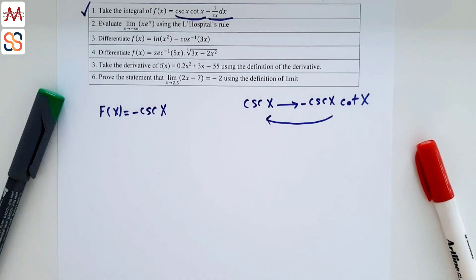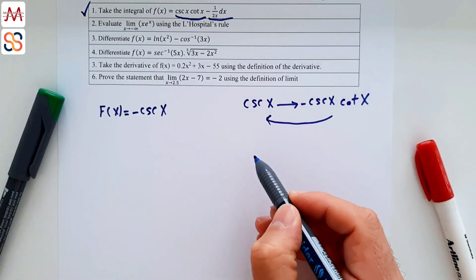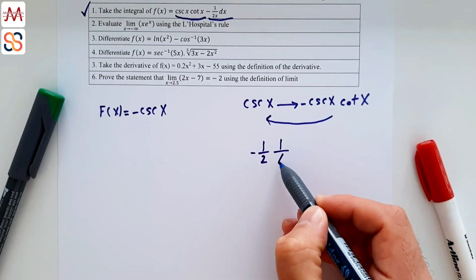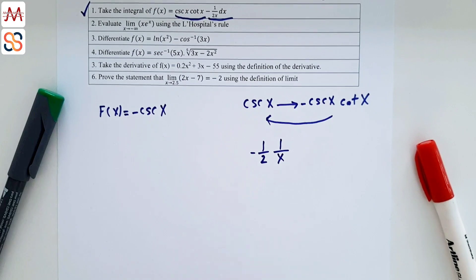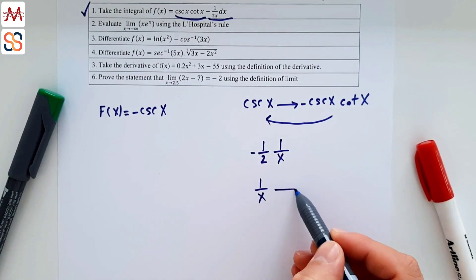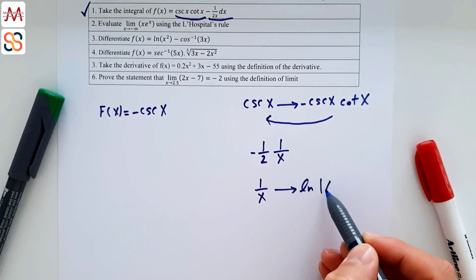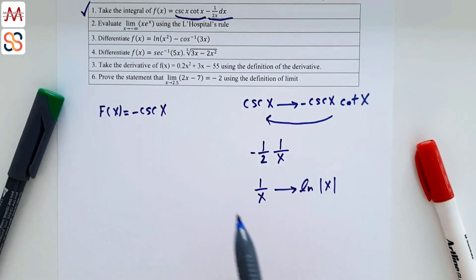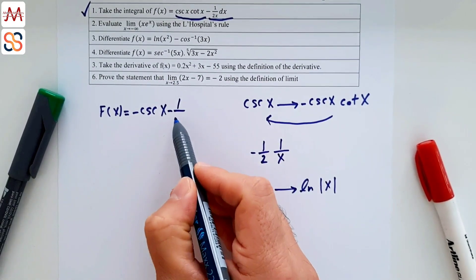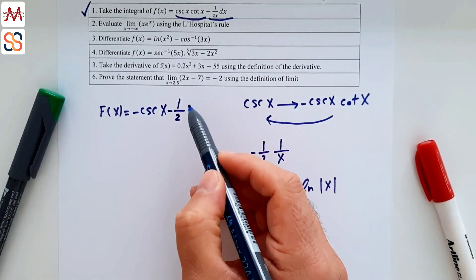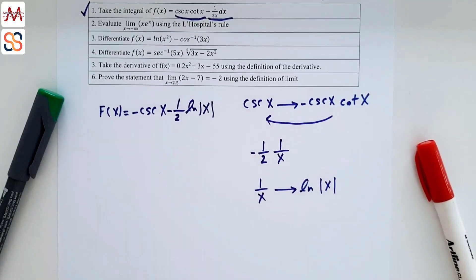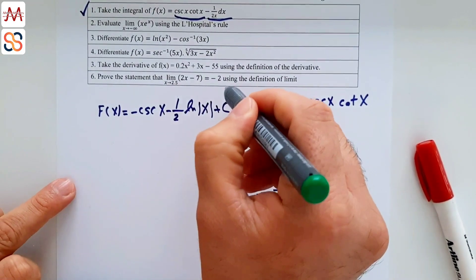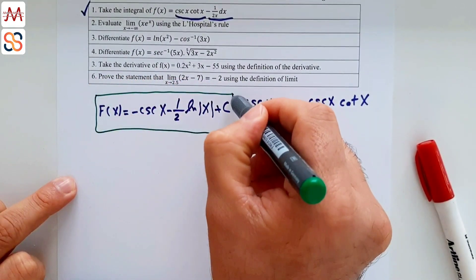For the second term, rewrite -1/(2x) as -1/2 times 1/x. The integral of 1/x is ln|x|, because the derivative of ln(x) is 1/x. So we write -1/2 as the coefficient and ln|x| as the integral of 1/x. Don't forget to add +C at the end. This is the final answer for question 1.